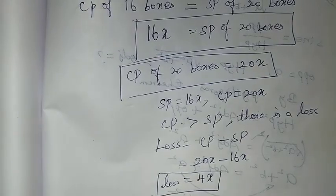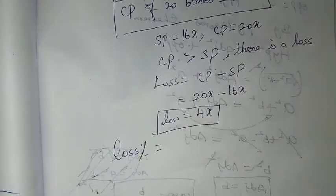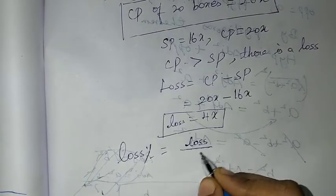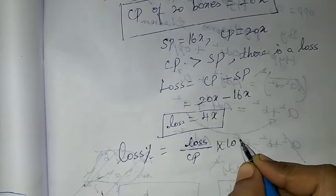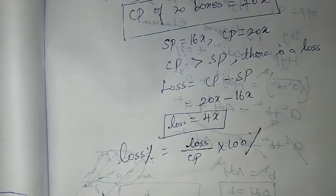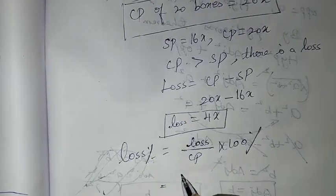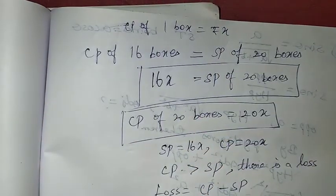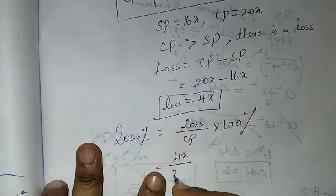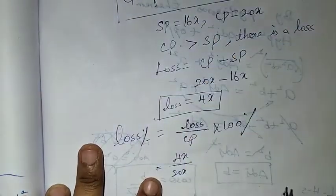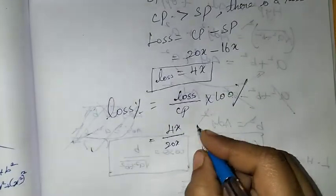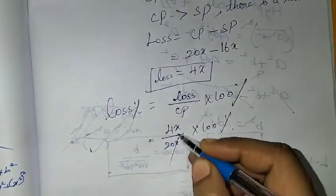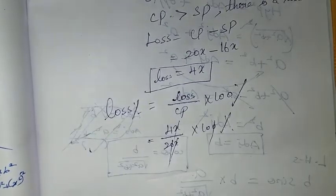Now we calculate the loss percentage. The loss percentage formula is loss divided by CP, multiplied by 100%. Loss is 4x and CP is 20x, so it is 4x divided by 20x, into 100%.